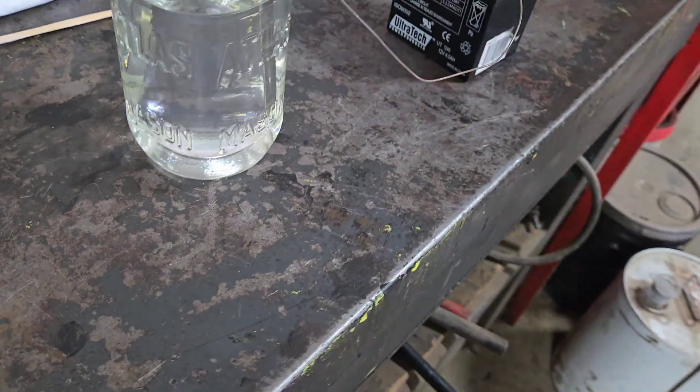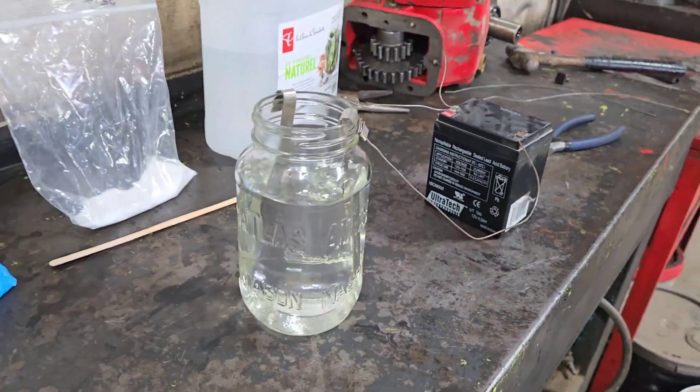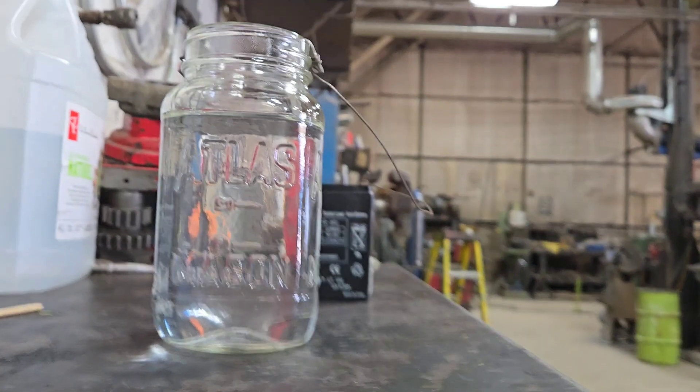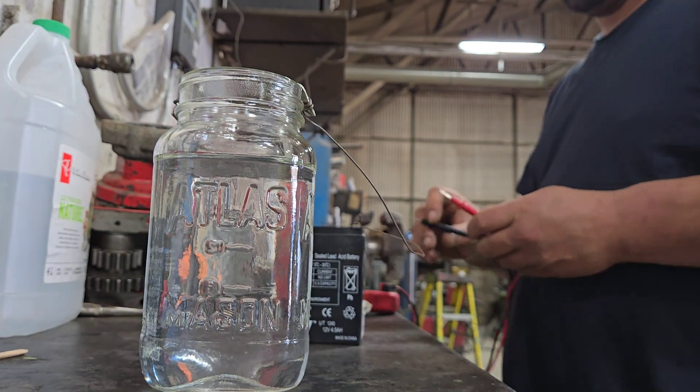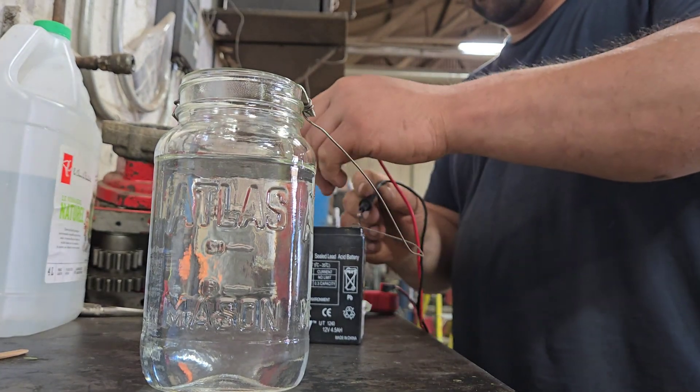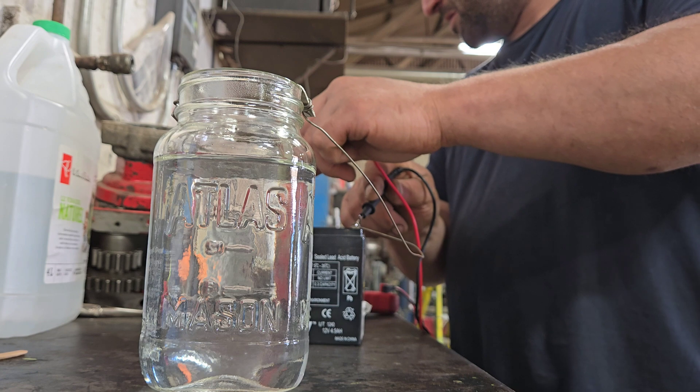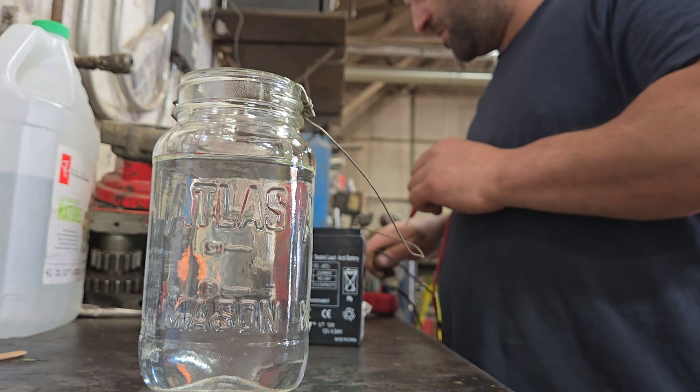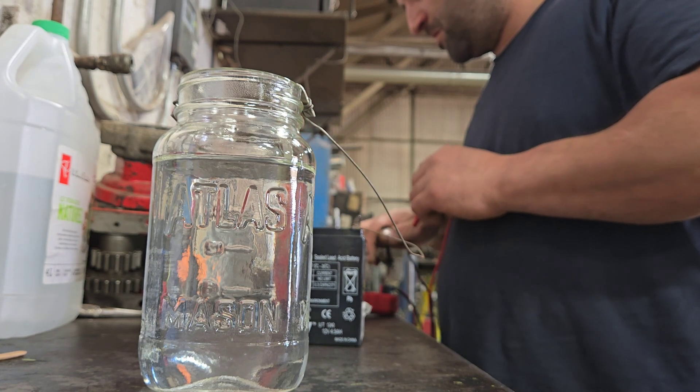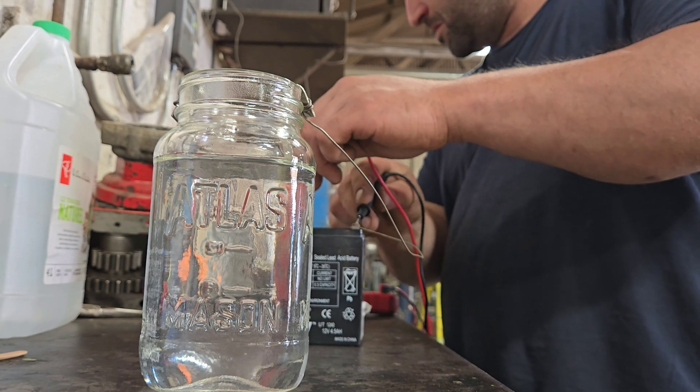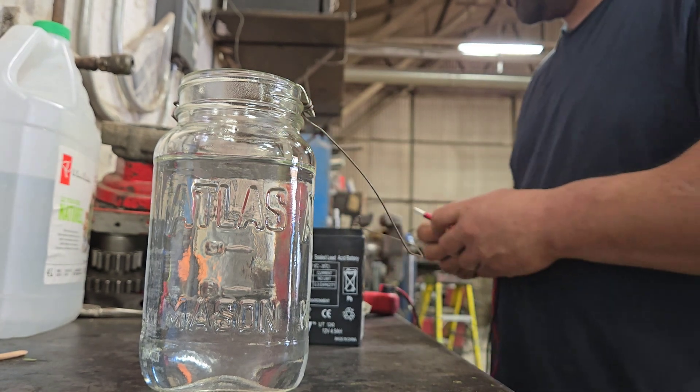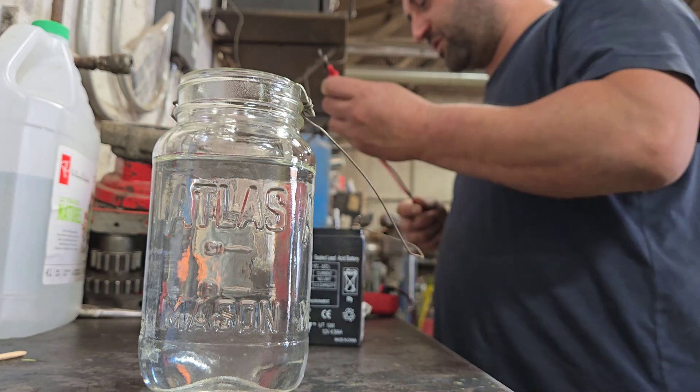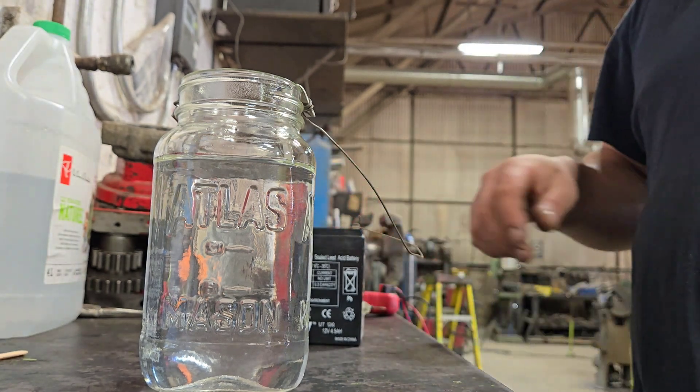I'm going to get my voltmeter and check this battery. Once there's a load on it, it went right down to zero. We got 0.8 volts. I'm going to have to find a different battery source.